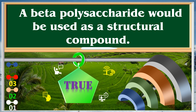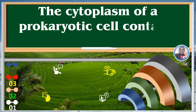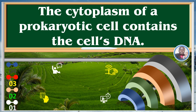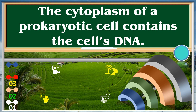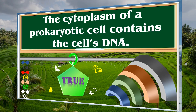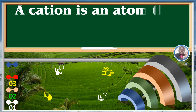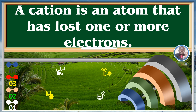The cytoplasm of a prokaryotic cell contains the cell's DNA. True. A cation is an atom that has lost one or more electrons. True.